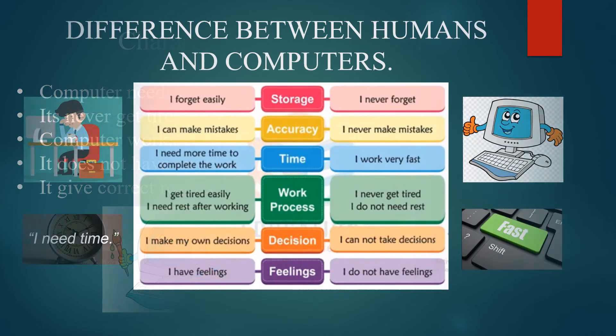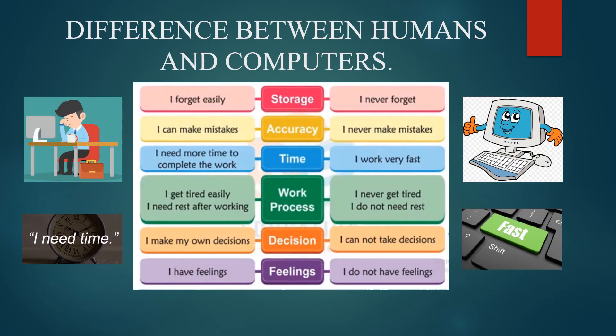Next we have the difference between humans and computers. The first point is storage. The human says: I forget easily and quickly. The computer says: I never forget. When we have a lot of things in our mind, we forget little points — but the computer never forgets.